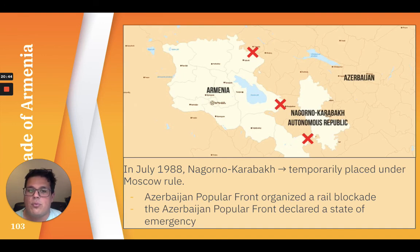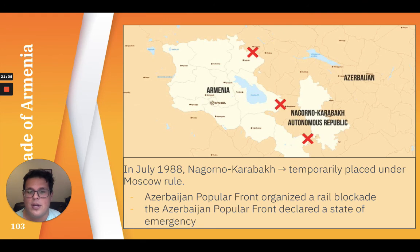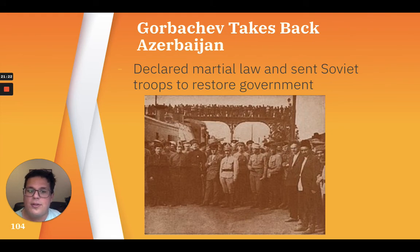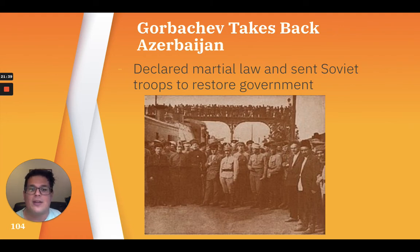In July 1988, Nagorno-Karabakh was temporarily placed under direct rule of the central government in Moscow. Both countries still claimed the territory. The Azerbaijan Popular Front organized a rail blockade of Armenia leading to shortages of petrol and food, and held demonstrations in Baku that rapidly degenerated into riots against local Armenians, with at least 91 people killed. On January 19th, the Azerbaijan Popular Front declared a state of emergency and its members seized government and Communist Party buildings. Gorbachev responded by declaring martial law and sending Soviet troops to restore the government. Late on the night of January 19th, 1990, 26,000 Soviet troops entered Baku, smashing through barricades and attacking protesters, killing over 130 people. While the army gained control of Baku, it alienated Azerbaijan, and thousands of Communist Party members publicly burned their party cards.